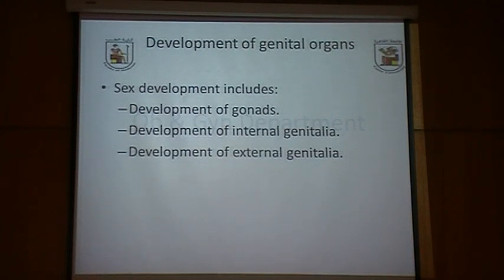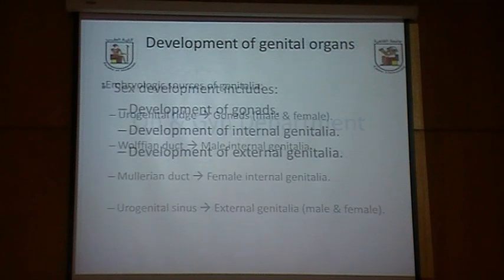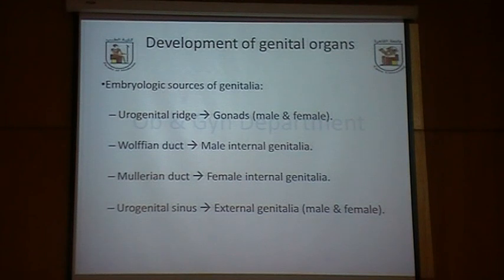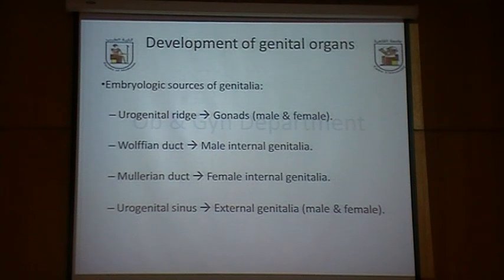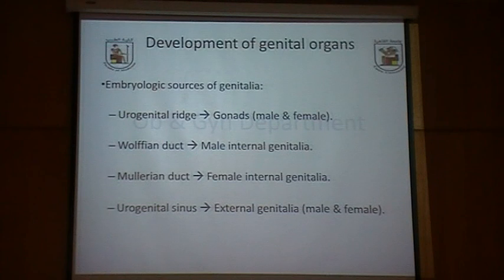Sex development includes development of the gonads, development of the internal genitalia, and development of the external genitalia. The urogenital ridge gives rise to the gonads, the Wolffian duct will form the male internal genitalia, the Müllerian duct will form the female internal genitalia, and the urogenital sinus will form the external genitalia, whether male or female.